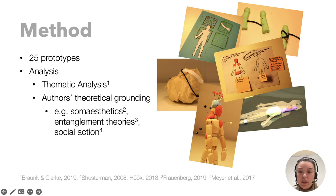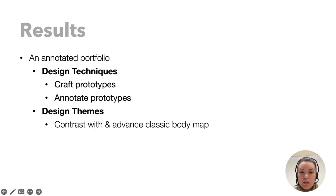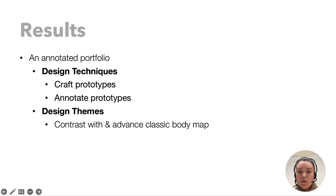The workshops resulted in 25 prototypes that illustrated ideas for alternative body map designs. We analyzed these ideas using a reflexive thematic analysis that was strongly shaped by our theoretical grounding as authors, such as in soma aesthetics, entanglement theories in HCI, or social action. The result of our analysis is an annotated portfolio that includes a set of five design techniques and six design themes that encompass how the classic body map could be advanced.